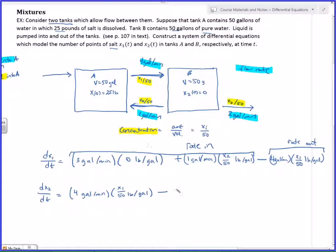So DX2 would have the same kind of setup. If you write it all the way out, the rate in is just 4 gallons per minute times X1 over 50 pounds per gallon. Minus, that's all that's coming in. I'm going to subtract all of this. Now technically, I would write it as 1 gallon per minute times X2 over 50 pounds per gallon plus 3 gallons per minute X2 over 50. But you should immediately see that it doesn't matter where it's going, it just matters that it's leaving, right?